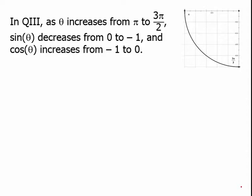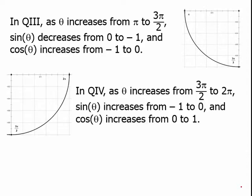In the third quadrant, from pi to 3 pi over 2, sine continues to decrease — it decreases from 0 to negative 1 — but cosine now starts to increase. Cosine had already reached its minimum value at pi, so now it's increasing from negative 1 to 0; it's still negative but increasing. In the fourth quadrant, sine increases from negative 1 to 0 and cosine increases from 0 to positive 1, so both are increasing.